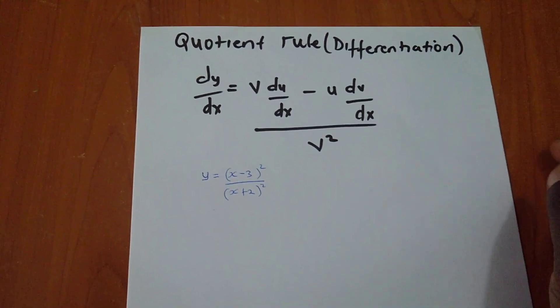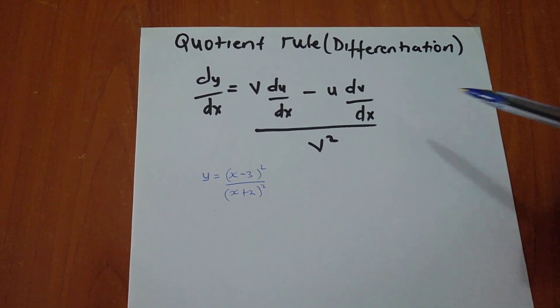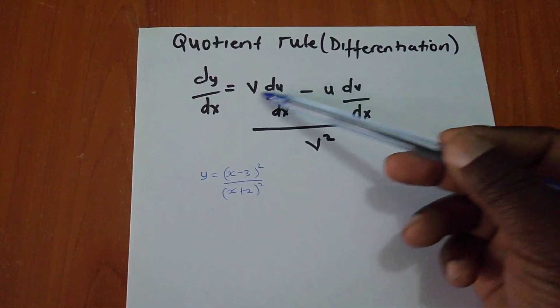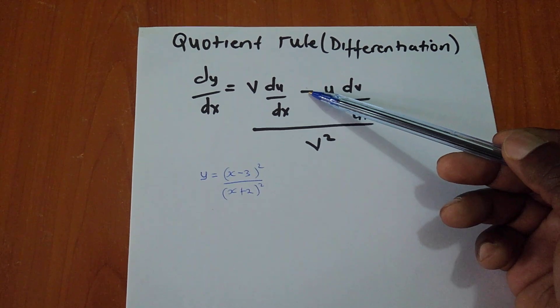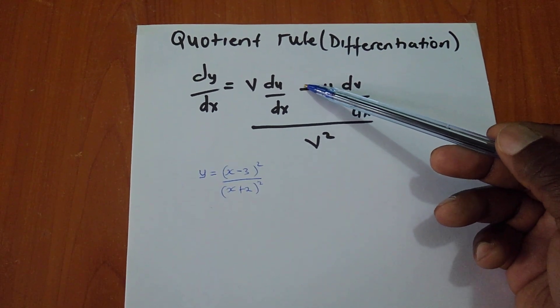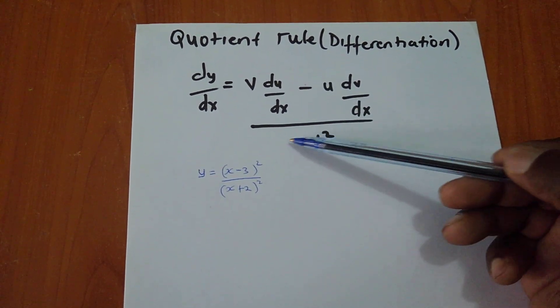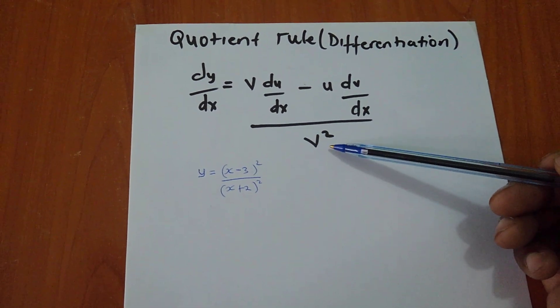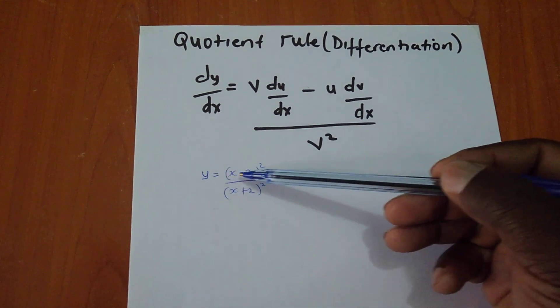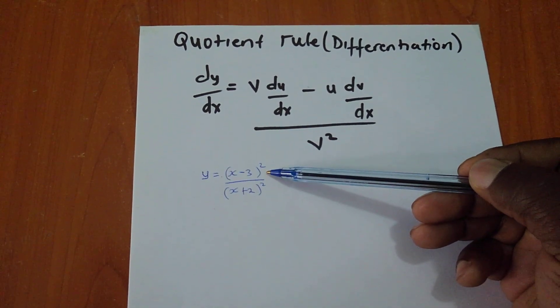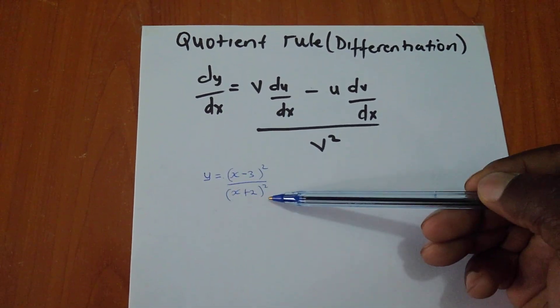Just like a product rule, this one has a formula like this, and in here it has a minus sign. But the product rule has a plus and doesn't have anything over v squared. So this is quotient rule. That's how you identify it - if you have an expression over another expression, then you know you can use quotient rule to differentiate it.